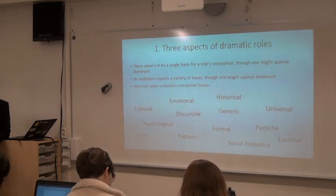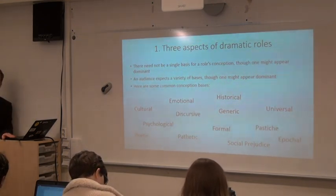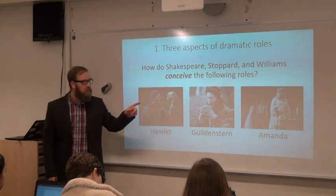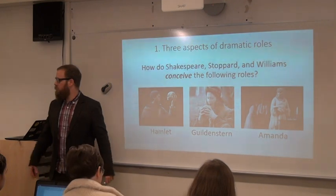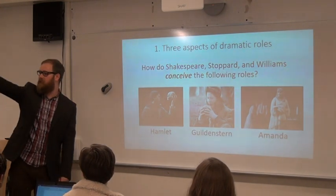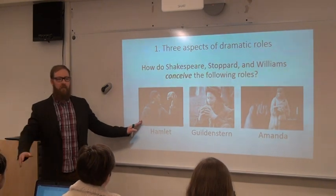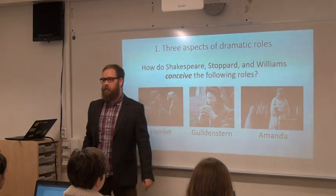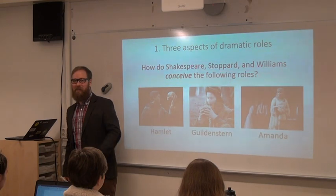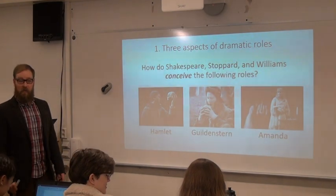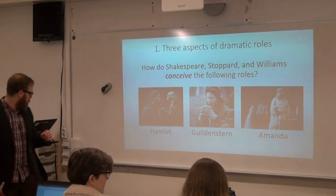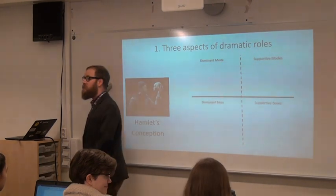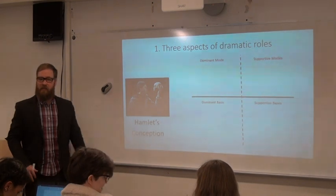Does everybody sort of understand where I'm coming from? Any questions? Good. Then I'm going to have you prove it to me. What I want you to do now is look at how Shakespeare, Stoppard, and Williams conceive each of these three characters. Sarah and the people in the back — I'm going to give you Hamlet. Front row, I'm going to give you Guildenstern. Five in the back, I'm going to give you Amanda — hopefully you've been reading. I want you to figure out the dominant mode and basis, and the supportive mode and basis. Then each group will present their findings to the class.